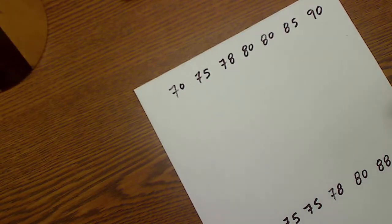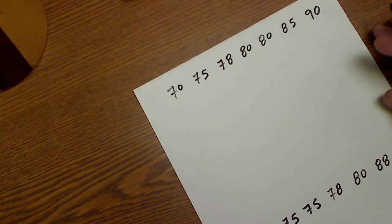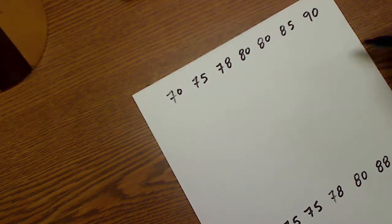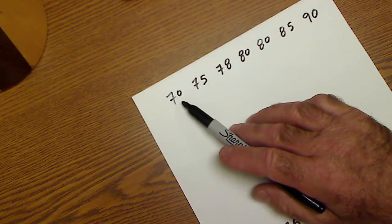Jonathan here. I just want to go over box plots and quartiles, interquartile range. A few different ideas here. So let's say this is a set of scores.